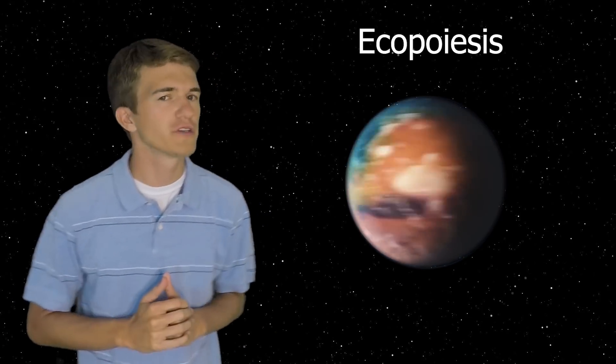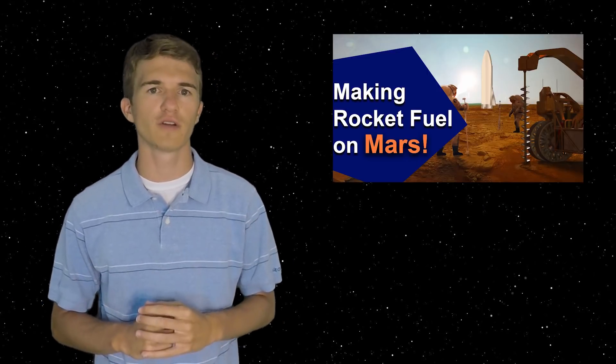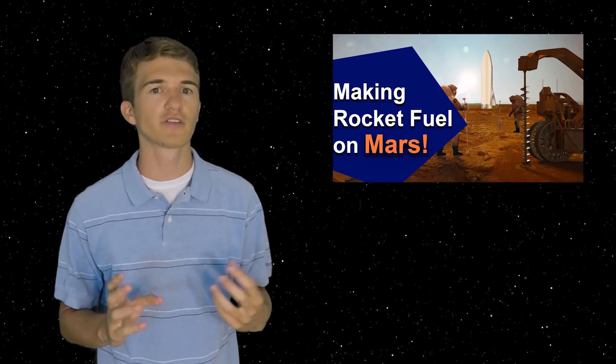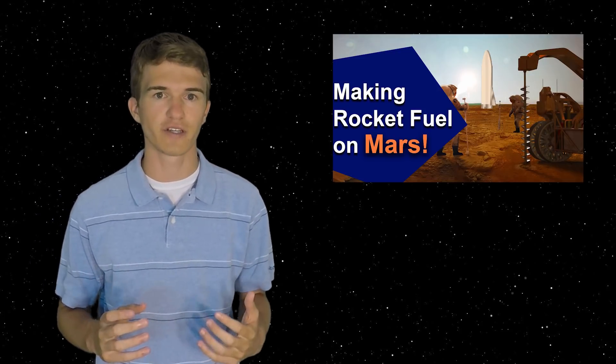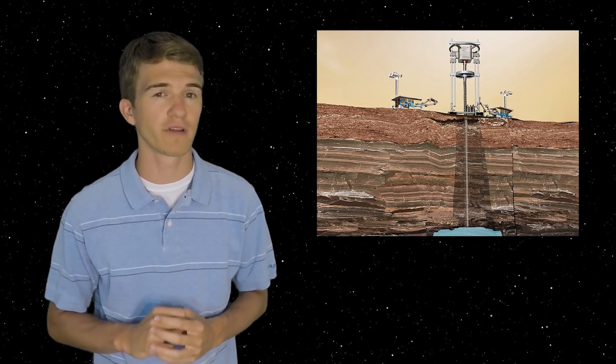In a more recent video, when we talked about creating rocket fuel on Mars, we briefly described how oxygen is created in the Sabatier reaction. And this again uses electrolysis, but instead of taking the carbon dioxide atmosphere, it actually requires the extraction of ice from underneath the surface and then separates the hydrogen and oxygen atoms from within the water molecules.